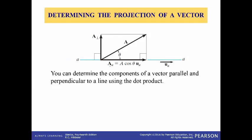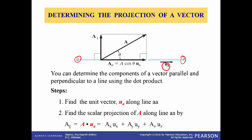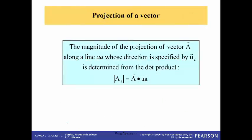As mentioned, the dot product is used to determine the projection of a vector on any axis or along any line. The unit vector in that direction we'll call u sub A. Whenever we want to determine the projection of a vector along the line, the first thing you have to do is find the unit vector along that line, and then find the scalar projection of A along that line using the dot product. This is a very important equation: the magnitude of the projection of vector A along the line whose direction is specified by the vector u sub A is determined from that dot product.